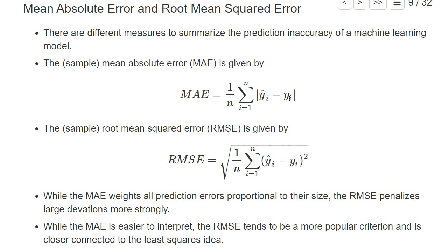What the mean absolute error measures is essentially how far on average our prediction of y is away from the true value of y. That's a very intuitive measure.